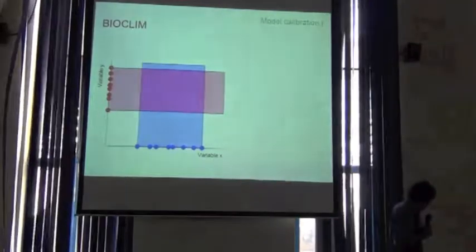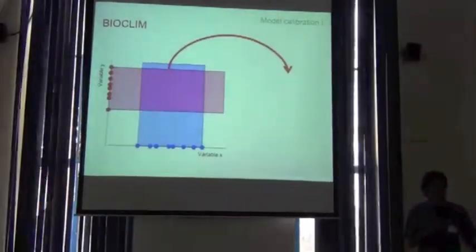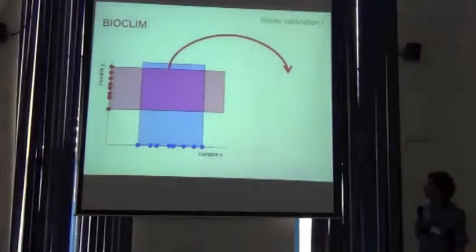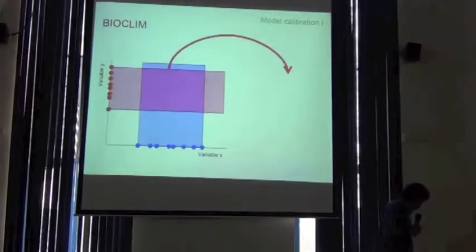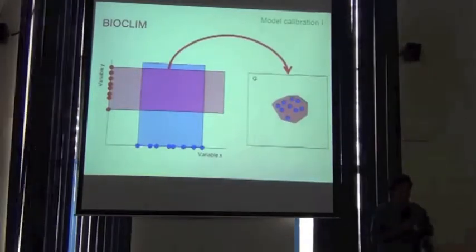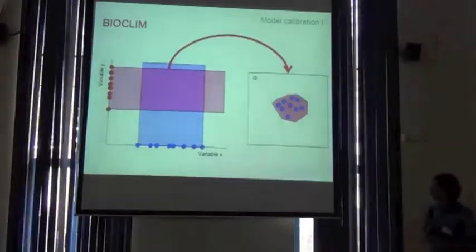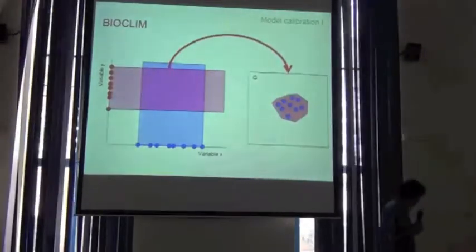It builds these bounding boxes in each one of the dimensions. And in this way, it constructs this envelope, which represents the niche of the species. Then it projects this envelope to the geographic space and produces this potential distribution map. As you can see, it's very simple.